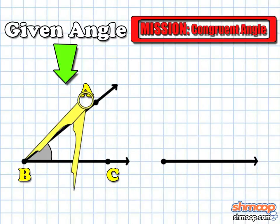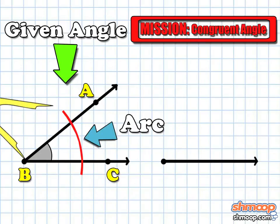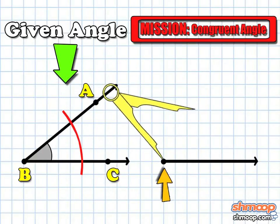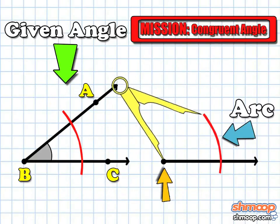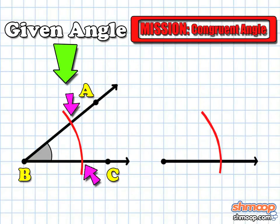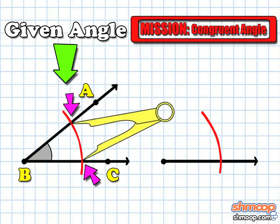Now we can use our compass to mark an arc length within the given angle, with the center at the endpoint of the angle. Without changing the measurement of the compass, let's draw an identical arc on our ray. We adjust our compass to be the distance between the intersections between the arc and the sides of the given angle.